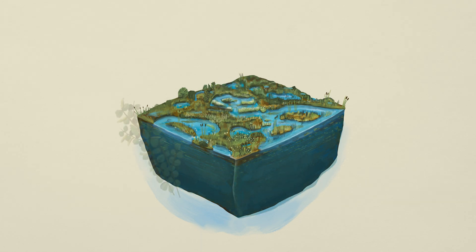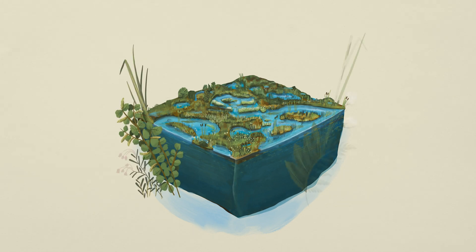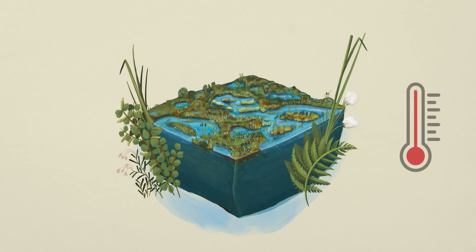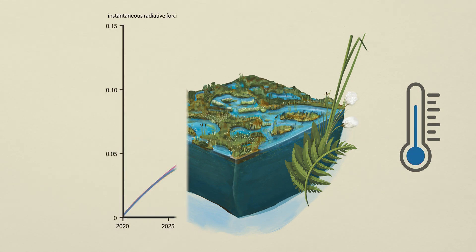Given a stable high water table, typical mire vegetation will establish, creating a new carbon sink. Under the right conditions, new peat will be formed, making the site climate cooling after approximately 100 years.